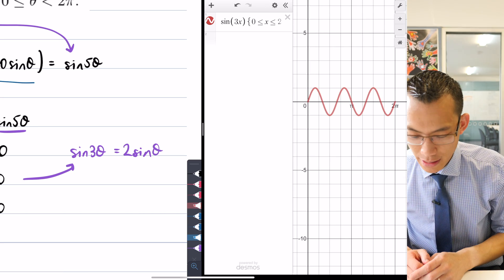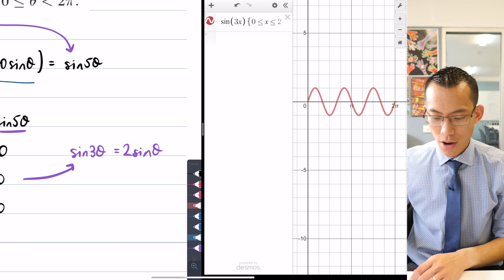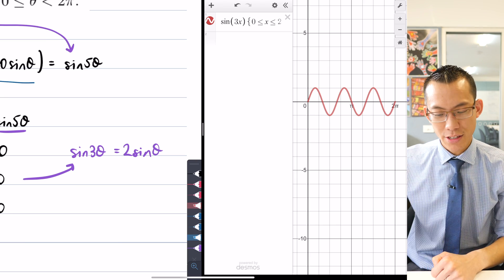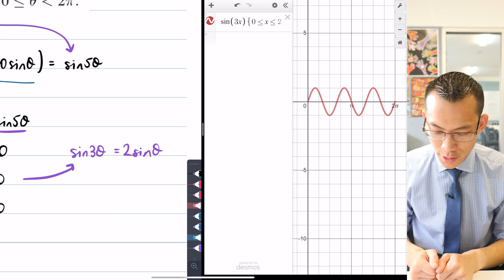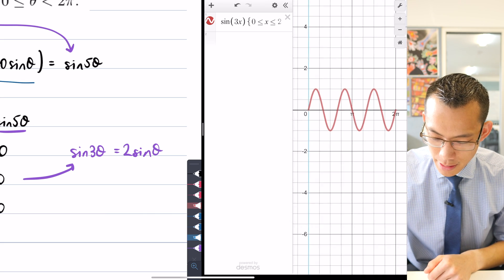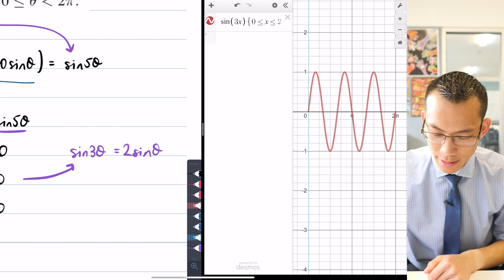So you can quickly see there, as we were anticipating before, I've got my three copies of sin x happening. You've got the up-down, and then you have it two more times as you reach 2π. So there's the first one, and then I might make this a bit bigger this way.